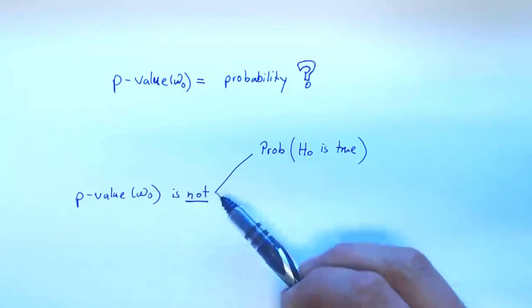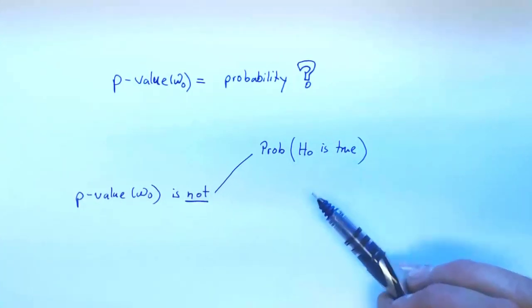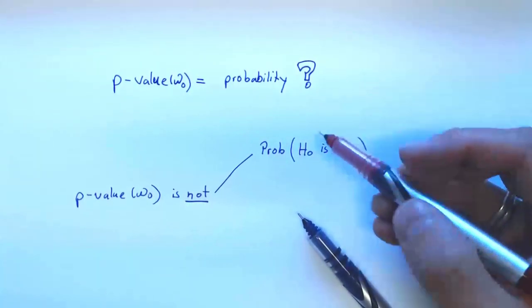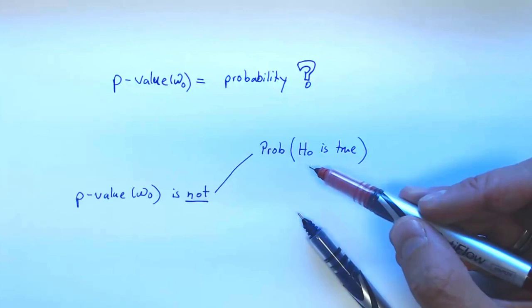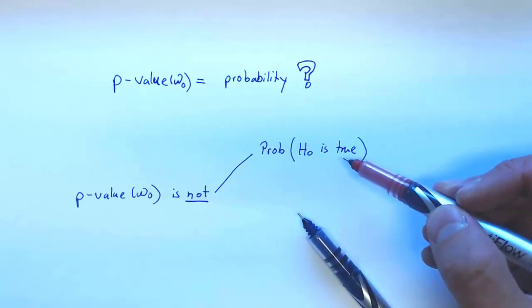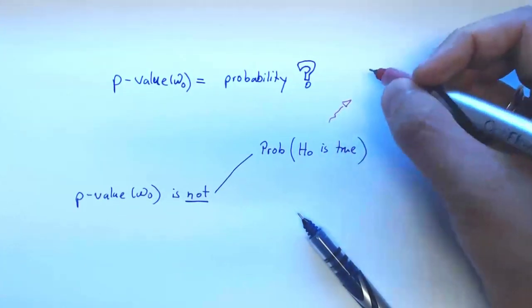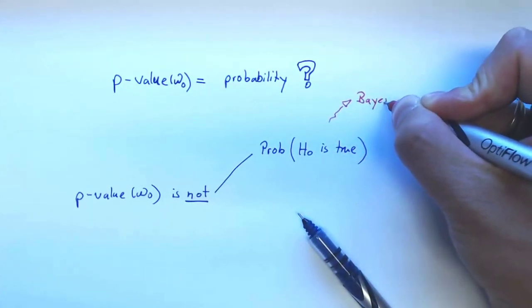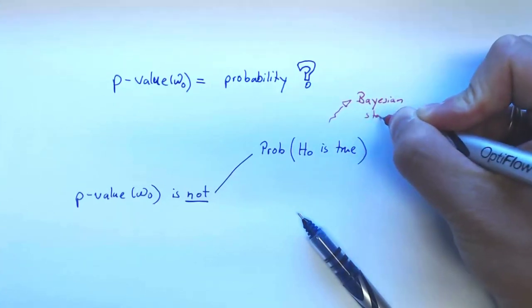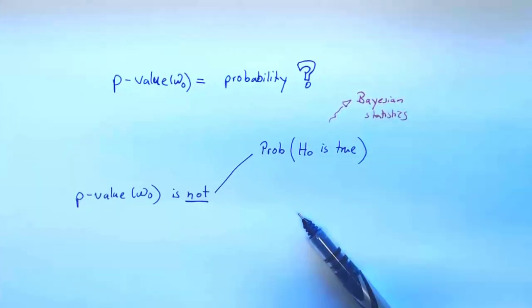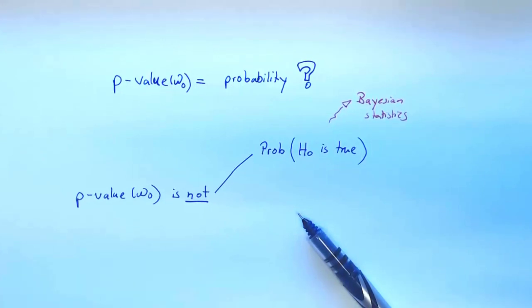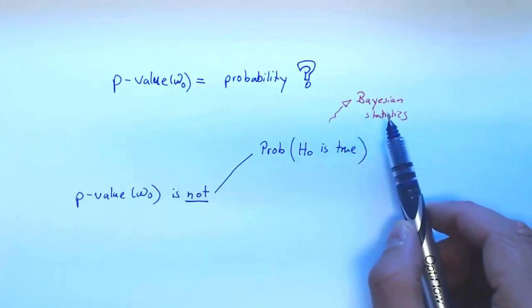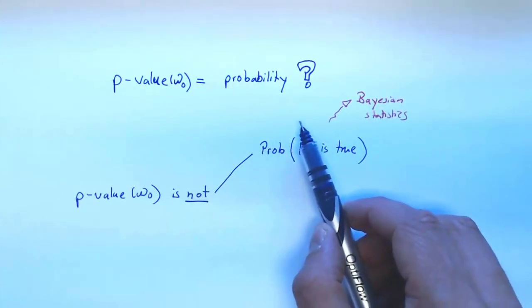The p-value does not give us the probability that H-naught is true. If you want something like that — a measure of the probability that H-naught is true — you have to take a completely different approach to statistics: you have to look at Bayesian statistics. But even then, Bayesian statisticians will not interpret the p-value differently; they have different concepts entirely to deal with quantities like this.